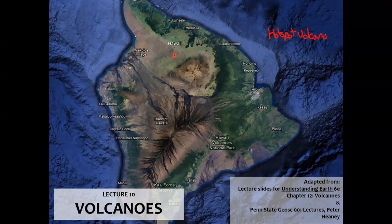We've also learned something about the composition. We've learned that it's mostly basalt that's being erupted here, which means that it's mafic. We've also talked briefly about how the eruptions that happen in Hawaii tend to be pretty gentle — they're not big explosive eruptions with huge ash clouds.